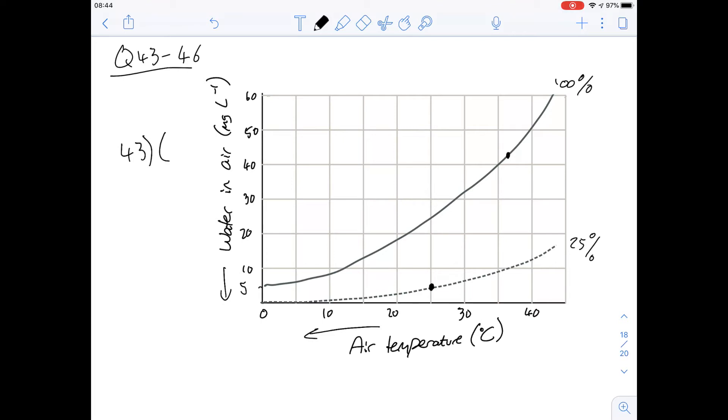Option D is summing this up pretty well. It says more cooling of the air passing through the nasal passages during exhalation results in more water being recovered because more of it is going to come out of the air, more of it will condense, and more of it will be recovered. So the answer for 44 is going to be D.